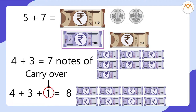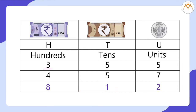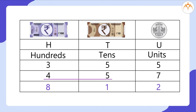Let's see how much she has in total now. She has 812 rupees. From the first bank: hundreds 3, tens 5, units 5. From the second bank: hundreds 4, tens 5, units 7.